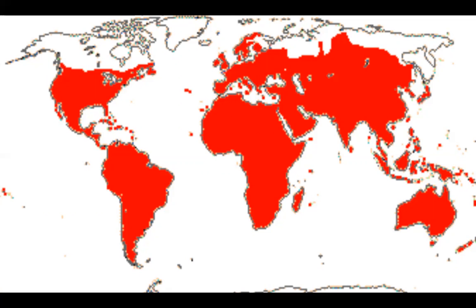Euphorbia commutata (tinted woodland Spurge) is another common local representative. One type of Euphorbia you might be more familiar with is the Chinese tallow tree. An even more familiar one that can be found anywhere at Christmas time is the poinsettia.